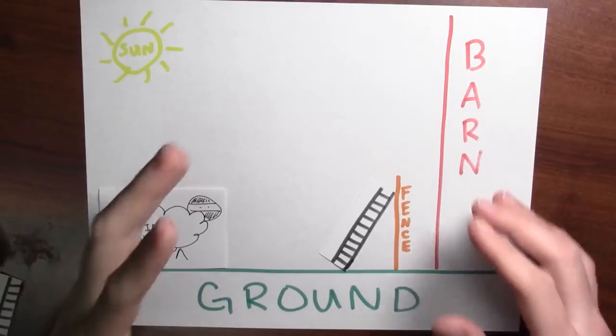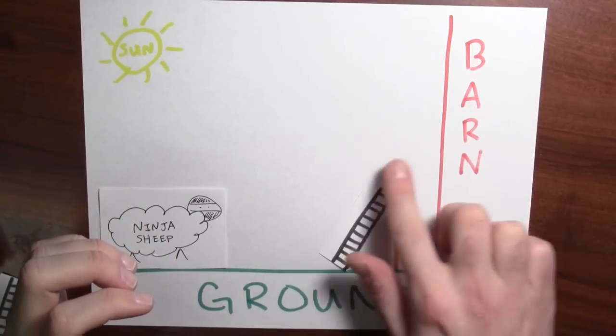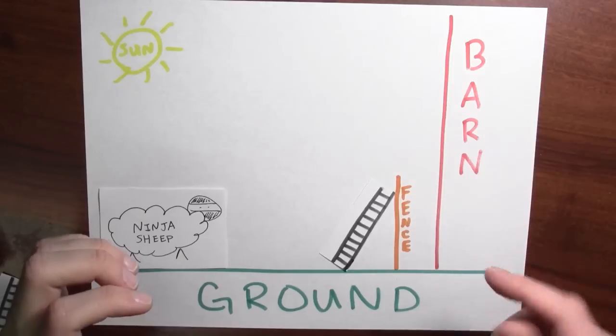The question is, what's the shortest ladder that you can use? Now, you want to pick the shortest ladder that you can get away with, which goes over the fence and touches the barn. I mean, if the ladder is too short, it won't even go over the fence.